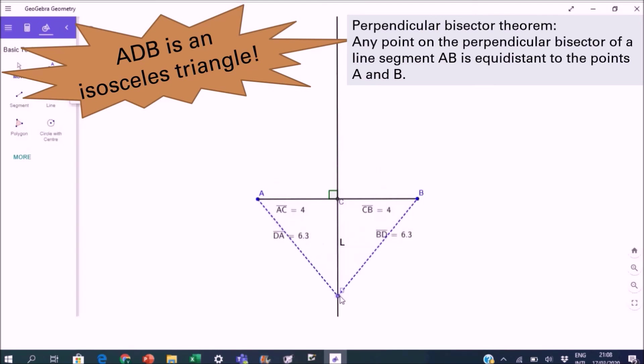This is also known as the perpendicular bisector theorem, which states that any point on the perpendicular bisector of a line segment AB is equidistant to the points A and B.